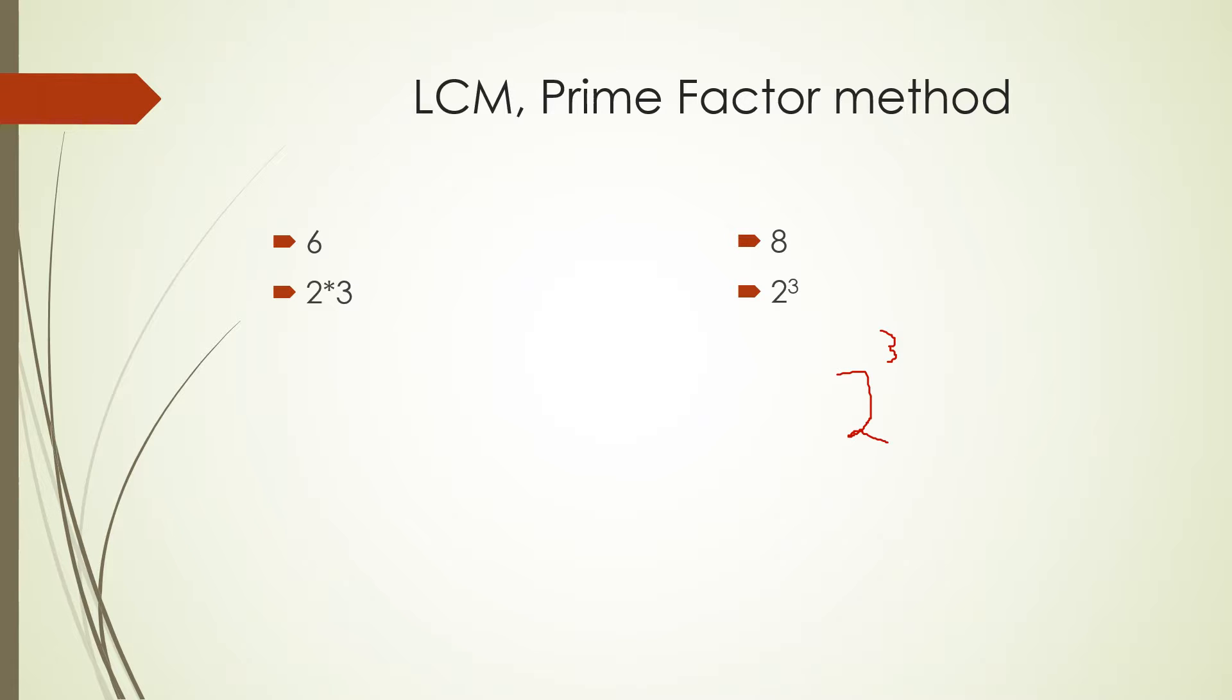We don't throw away any factors this time because we need them all for LCMs. And we'll put that over here times 3. And that will be your LCM. 2 cubed times 3, which is 8 times 3 is 24. The same answer we got before.